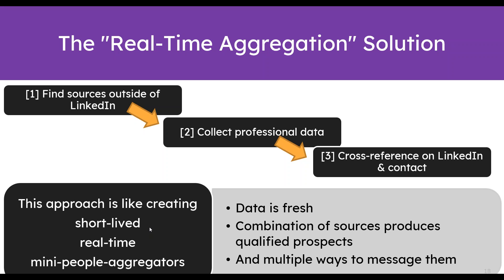The next part is what they call the real-time aggregation solution. Here, I'm starting the search outside of LinkedIn — I'm going to the sources where my potential candidates are. Then I collect the data, and then I go to LinkedIn, cross-reference, find the contact information, and get in touch with them. The data is fresh this way. A combination of sources is better than using one source, and then you have multiple ways to message them — you can invite them, email them. People aggregator companies like Seekout collect data globally and cross-reference. Here we are creating a mini people aggregator with precise data exactly for our own purposes.